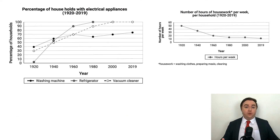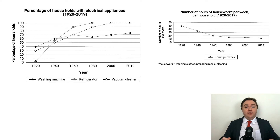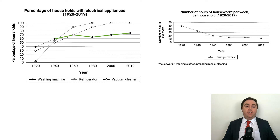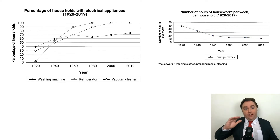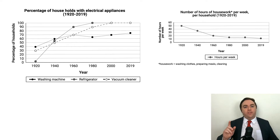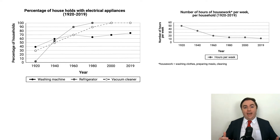So, in the first graph, we see the biggest changes in refrigerator. Next is vacuum cleaner. Last, washing machine changes the least. I then look to graph 2 — it has only one line that steadily goes down before leveling off, which makes the task a little more simple. With these general ideas in mind, we can start making notes about what data we will include and exclude.